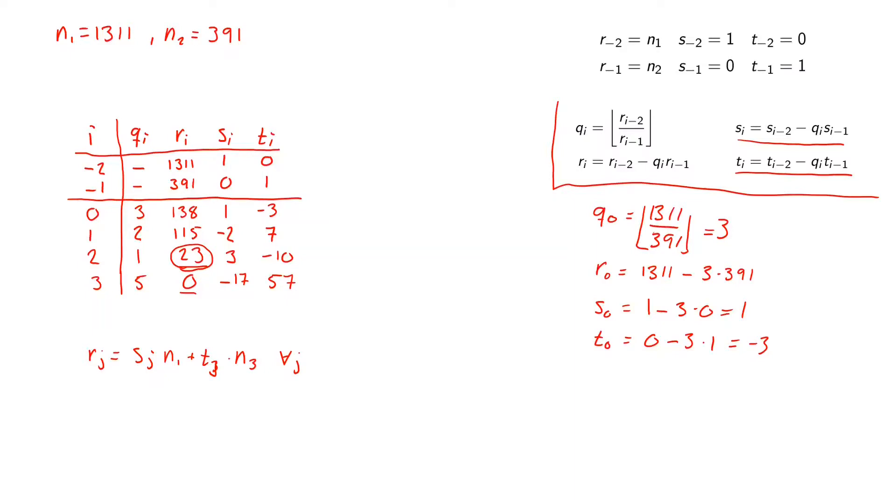So we can look here if we start looking at the row for i equals 0. What we have found here is that we can write 138 equals 1 times 1311 minus 3 times 391. And for the next row we can write 115 equals minus 2 times 1311 plus 7 times 391. And here we have 23 equals 3 times 1311 minus 10 times 391. And finally here we have 0 equals minus 17 times 1311 plus 57 times 391.